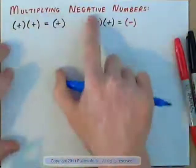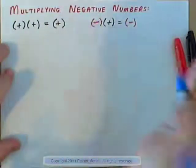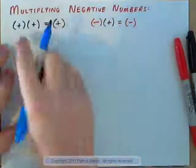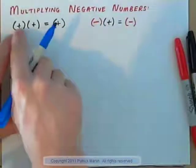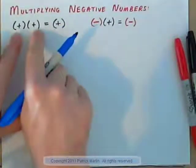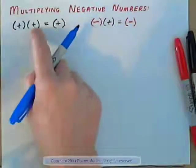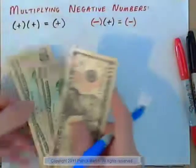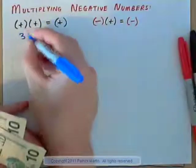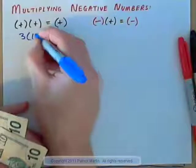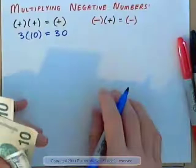Now, multiplying negative numbers — let's look at some situations. Let's look at multiplying positives first. We know positive times a positive equals positive. This is parentheses touching parentheses; when you see that, it means multiplication. So obviously, if we have, for example, three $10 bills, that equals positive 3 times positive 10, which is positive 30. That's $30.